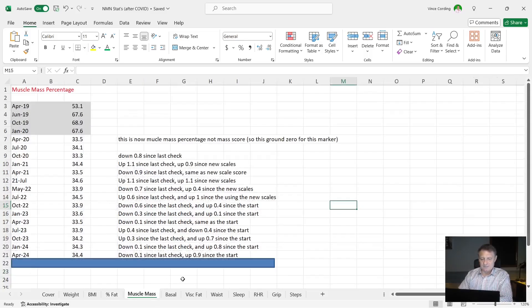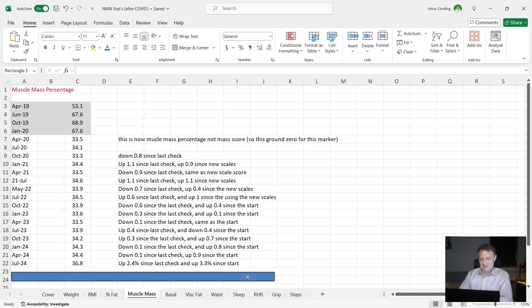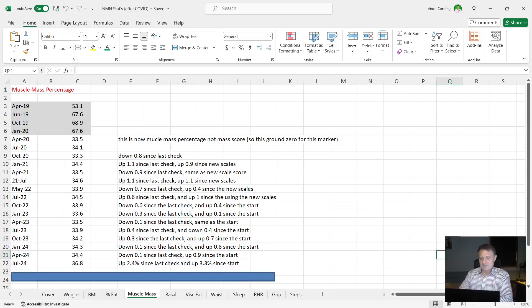Next, let's look at my muscle mass. You can see here 34.4 was the last percentage for my muscle mass. This time it is 36.8. So I'm up 2.4% since the last check and up 3.3 since the start. So although I've put weight on, I've dropped my fat mass and I've upped my muscle percentage, which I'm very happy with indeed.